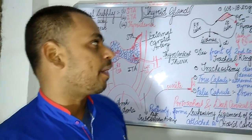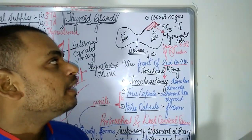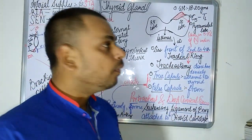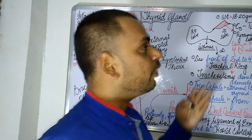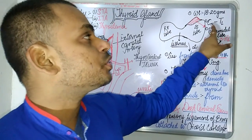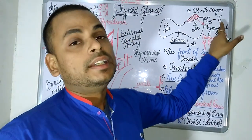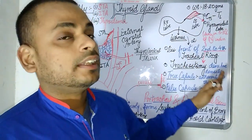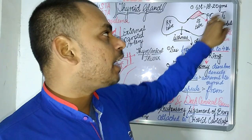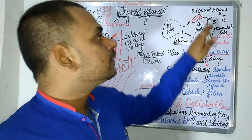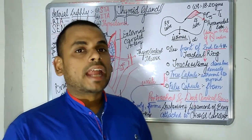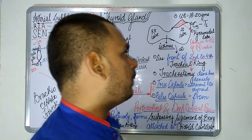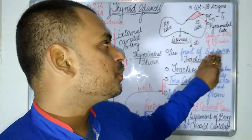In an adult, the thyroid gland weighs approximately 18 to 20 grams. Looking at the vertebral column, the thyroid gland lies opposite the cervical vertebrae — specifically between C5 and T1, that is from the fifth cervical vertebra to the first thoracic vertebra.